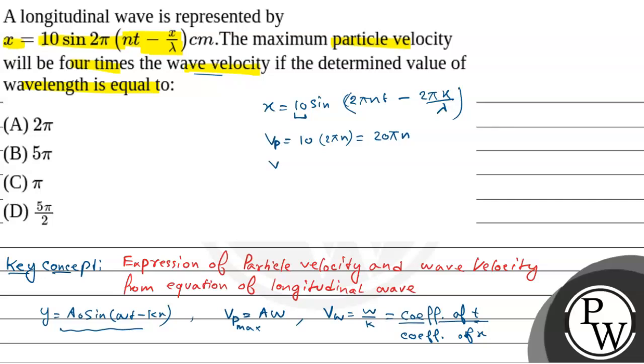So velocity of the wave will be coefficient of t, that is 2π n, by coefficient of x, that is 2π by λ. So this equals nλ.